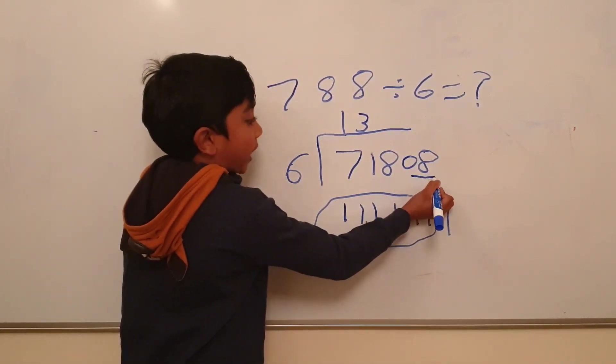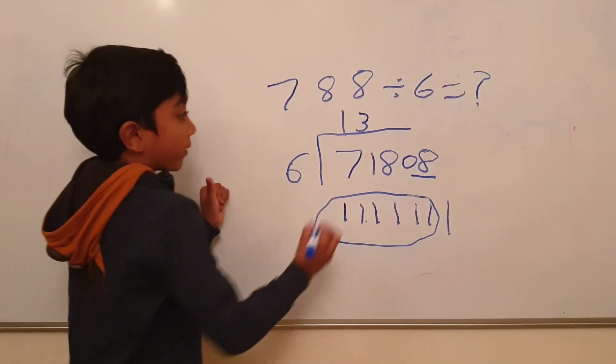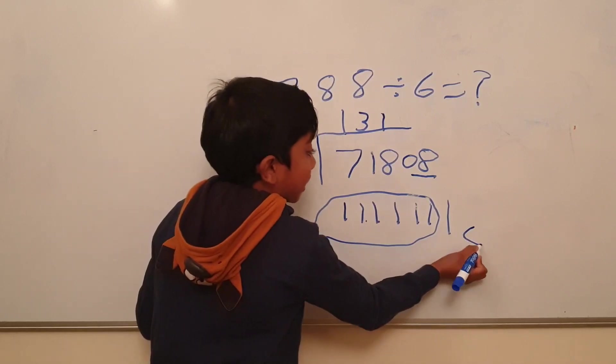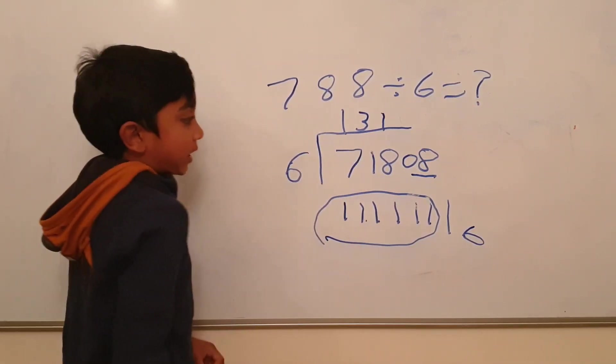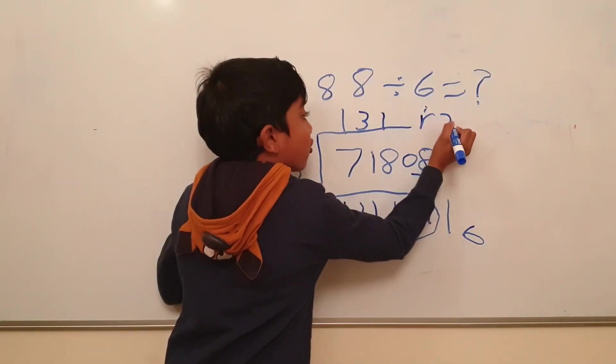But we can't forget that we have 8. So how many 6 in 8? One. Now 6 goes in here. 6 got into the bus. Only 2 remaining.